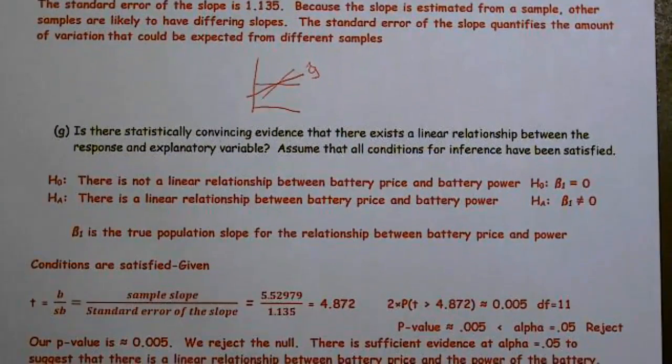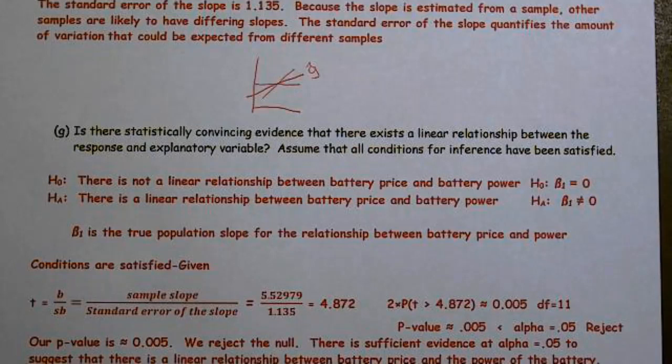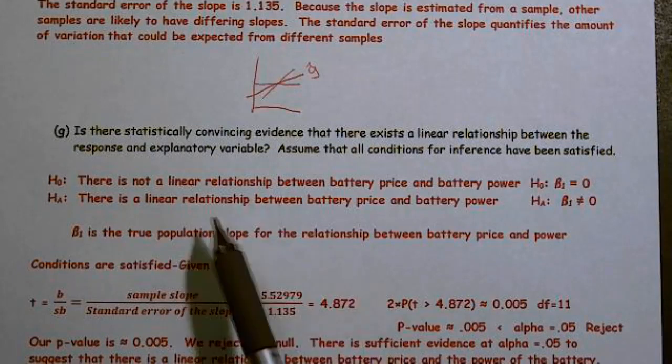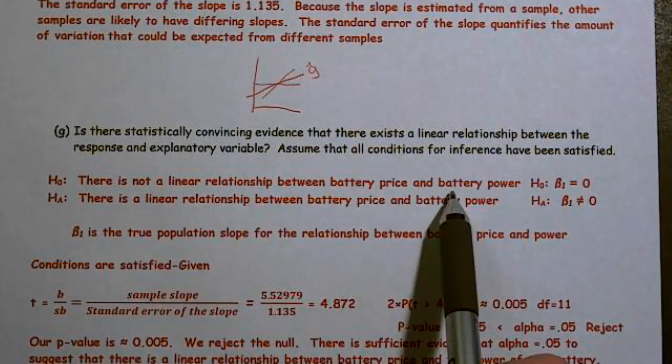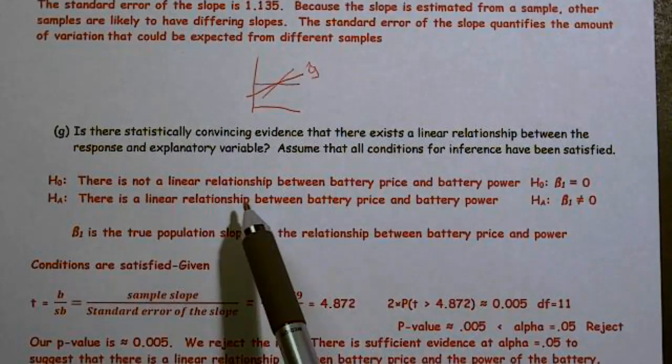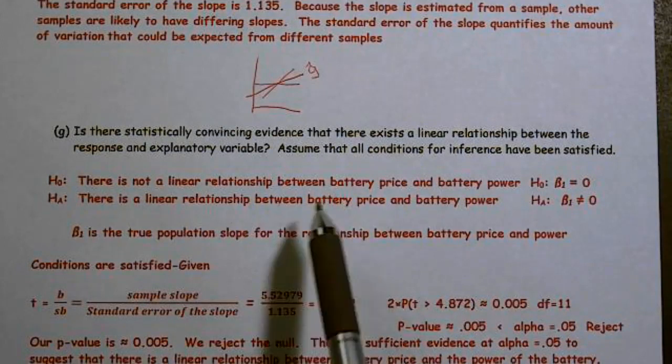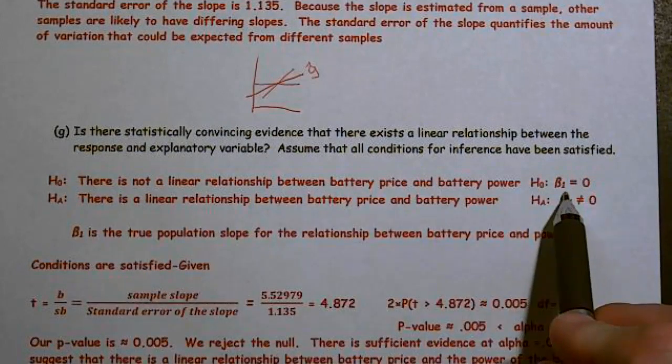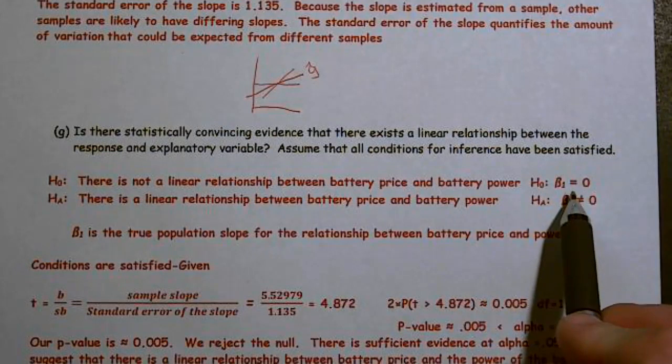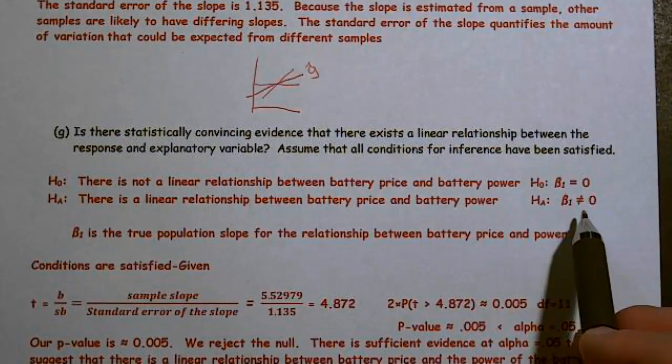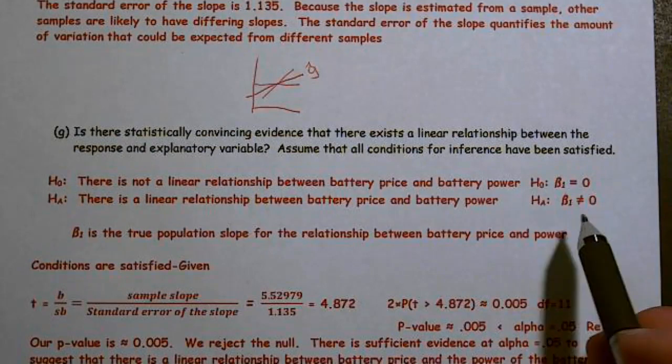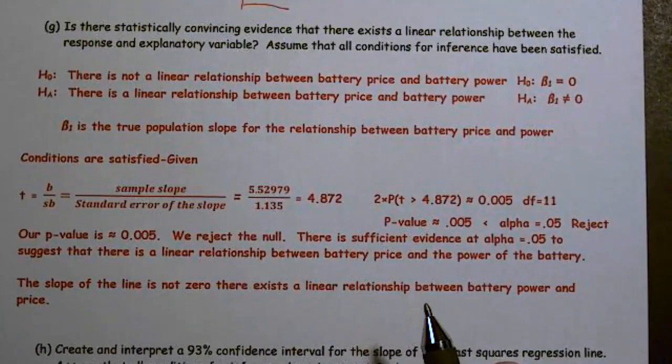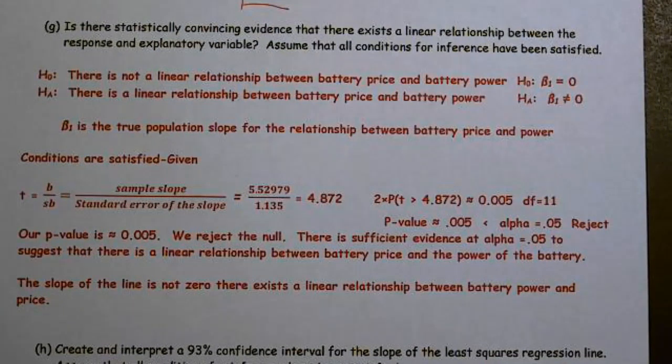The next thing, is there statistically convincing evidence there exists a linear relationship between the response and explanatory variable? All right. We've previously defined X and Y. Otherwise, I'd have to do that. But I've done that previously. So there's not a linear relationship between battery price and battery power. There is a linear relationship between battery price and battery power. And so we have beta 1 equals 0, which means it's a horizontal line, no linear relationship. Beta 1 does not equal 0, means it's something other than a horizontal line.